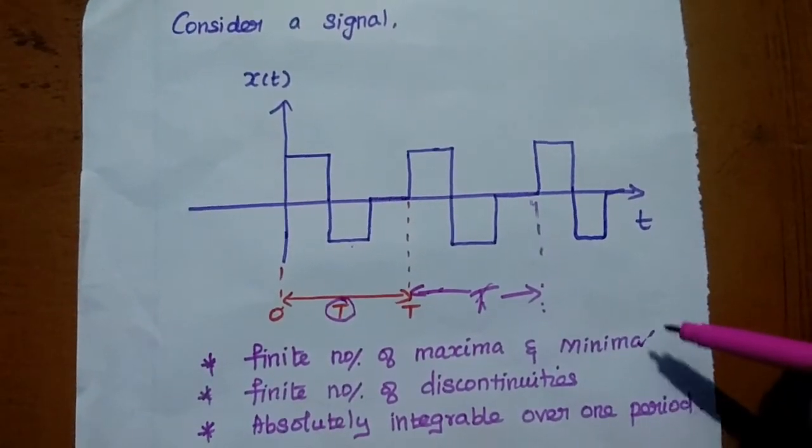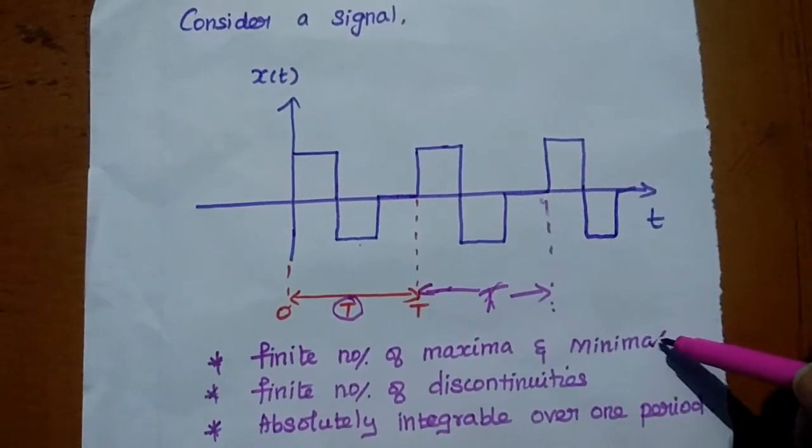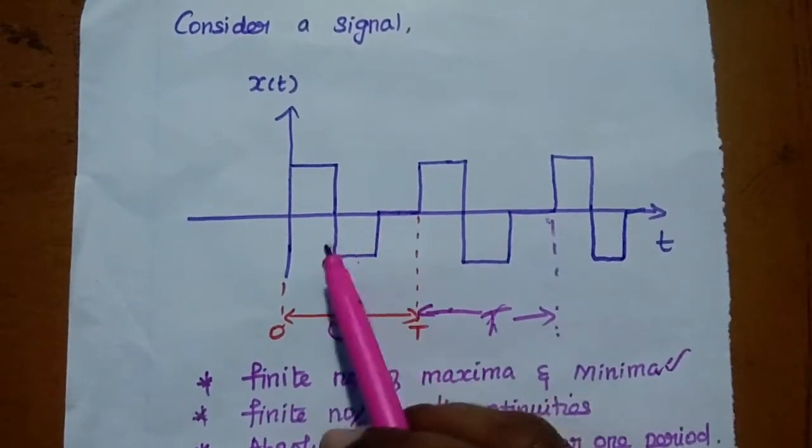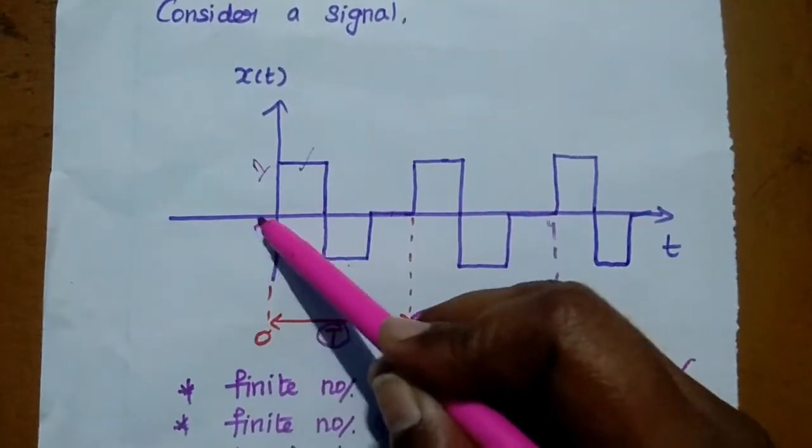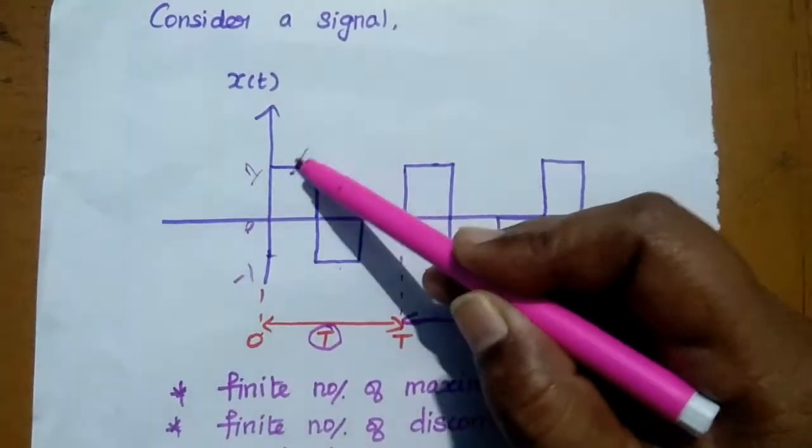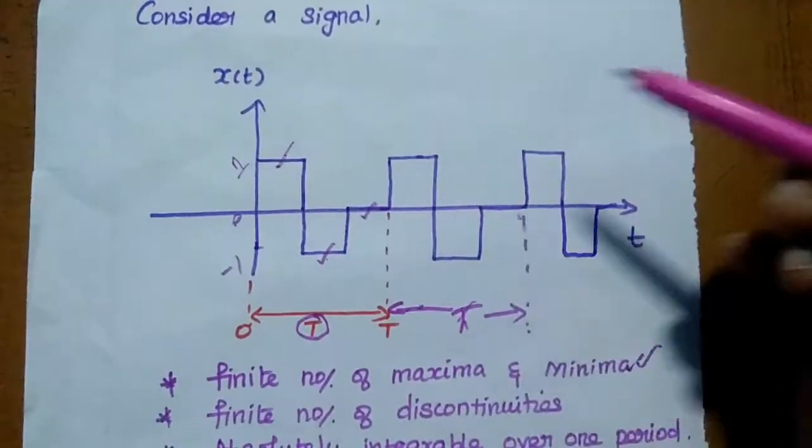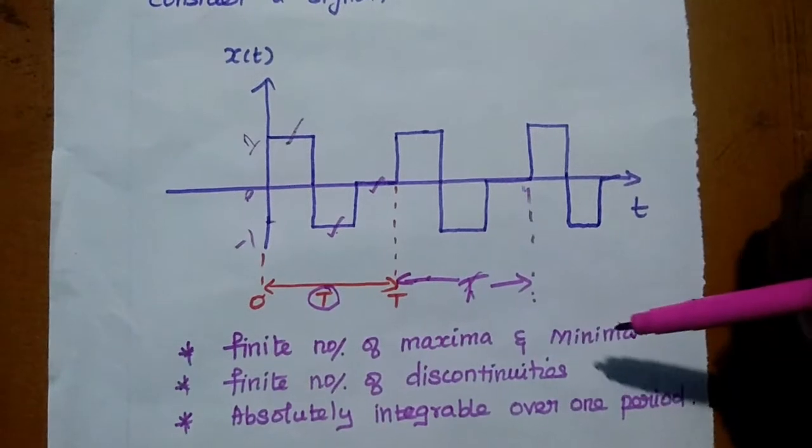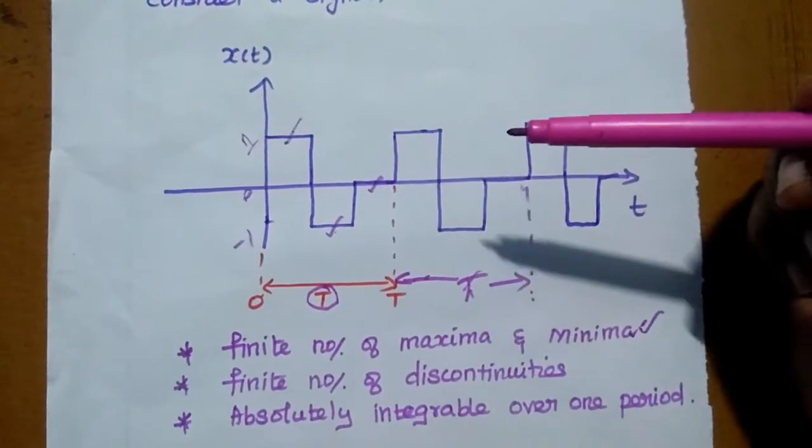For Dirichlet conditions, what is the first one? It has finite number of maxima and minima. Here we have to take one complete cycle. In this cycle, the maxima value is this one. We can assume this is 1, this may be 0, this is minus 1. In this signal, the maxima value is 1. The minimum values are minus 1 and 0. So the signal has finite number of maxima and minima. It has one maximum value and two minima values.